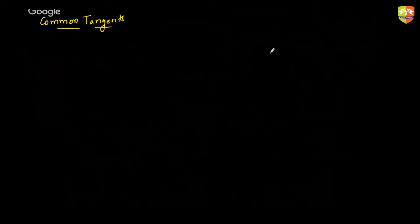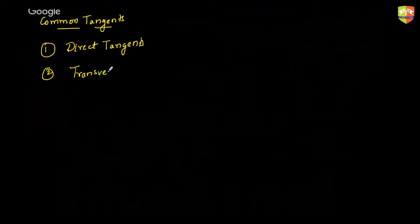Now we'll spend some time on the concept of common tangents. We all know very well that you can have two types of common tangents drawn to a pair of circles: one is called the direct tangents and the other is called the transverse tangents. There is nothing new in this concept because you are already aware of it from your junior classes. So we'll directly start with problem solving on this concept.